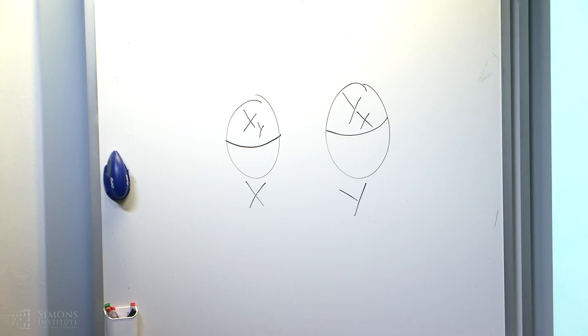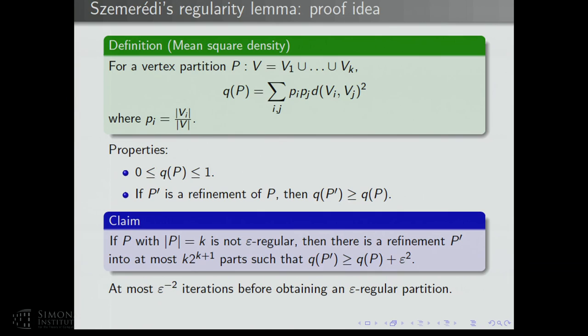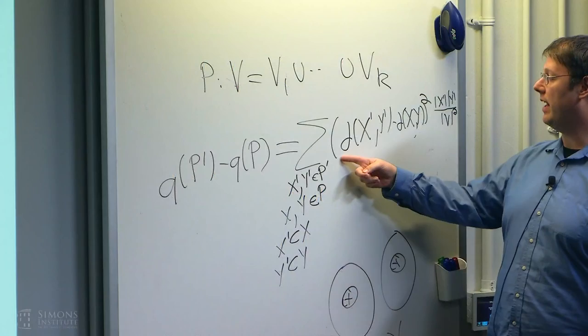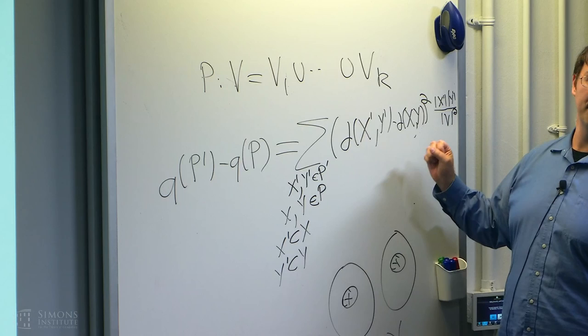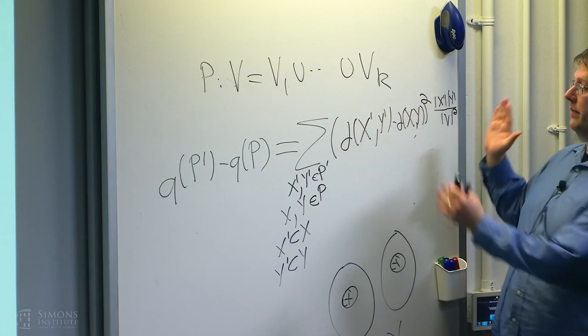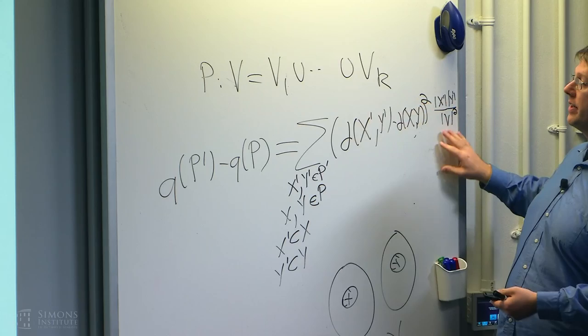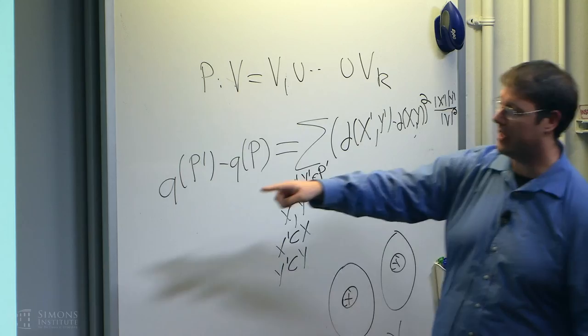So P' is just P refined by cutting each part into these 2^{k+1} pieces. To get the mean square density increment: because of our choice of x_y and y_x, we're guaranteed that the average value of the absolute difference |d(X',Y') - d(X,Y)| is at least epsilon, which gives at least epsilon² in terms of the average on the right-hand side. That gives the epsilon² increment.